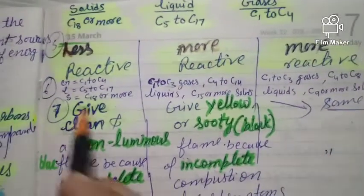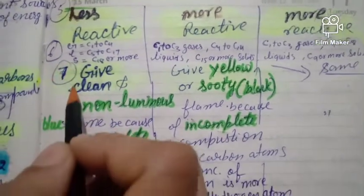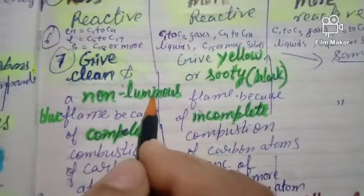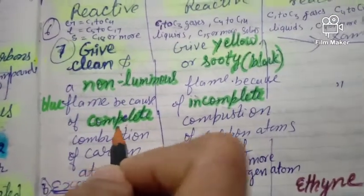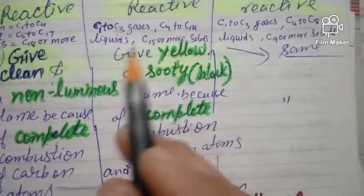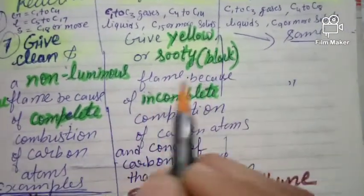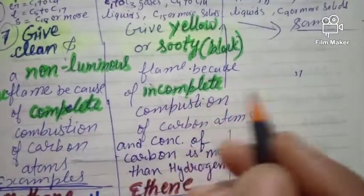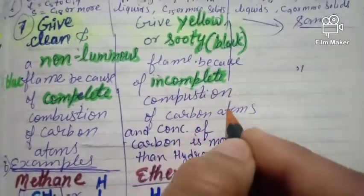Another difference is that saturated hydrocarbons burn completely and give a clean, non-luminous blue flame due to complete combustion of carbon atoms. Unsaturated hydrocarbons, when burned, give a yellow, luminous, sooty flame — also called a black flame — because of incomplete combustion of carbon atoms and due to the higher concentration of carbon relative to hydrogen in unsaturated hydrocarbons.